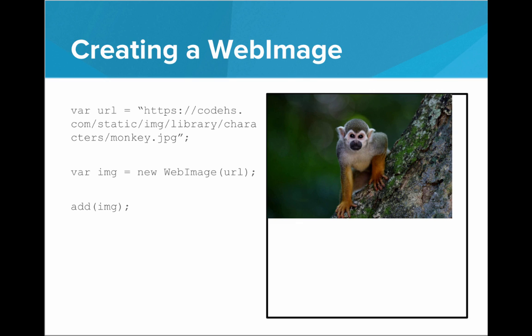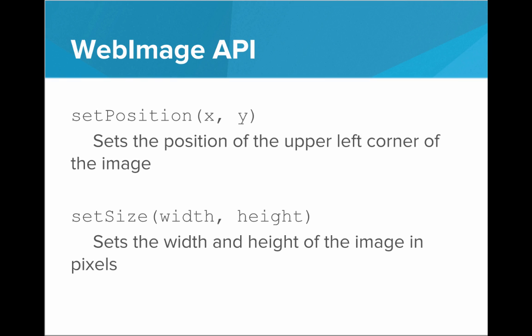WebImage provides a lot more functionality than just adding an image to the canvas. There's a setPosition function — we can call image.setPosition and pass it an x and y coordinate, and that will set the position of the upper left corner of the image. We can also call setSize and pass it a width and height, and that will set the width and height of the image in pixels. So we can make our image very small, very big, square, rectangle — whatever we want.